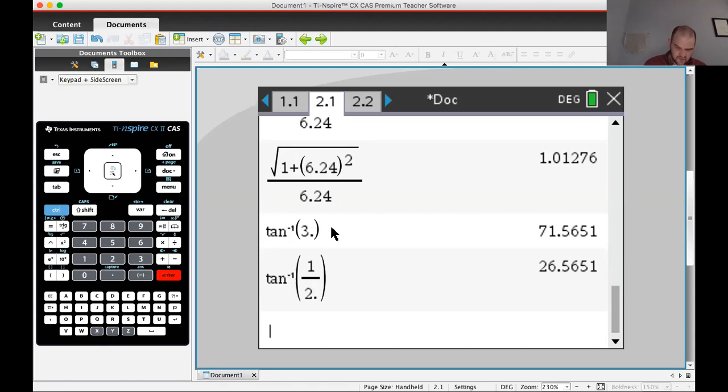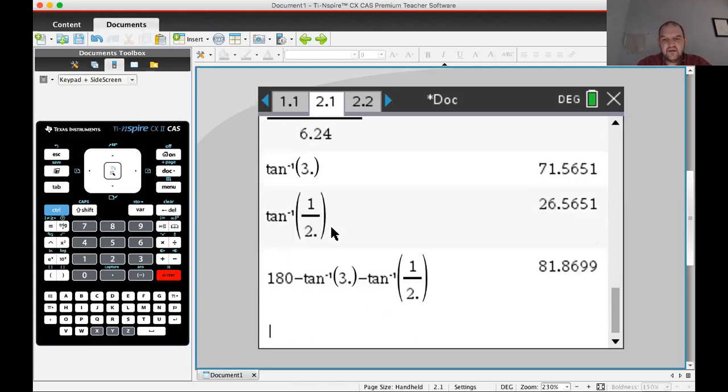And then so C is going to be 180 minus those. So let me, let's do that. Let's do 180 minus. There's no 180 because a triangle adds up to 180. This 81.8, ooh, 699. So when you round, you get 81.870, that's my least favorite, 81.870 degrees.